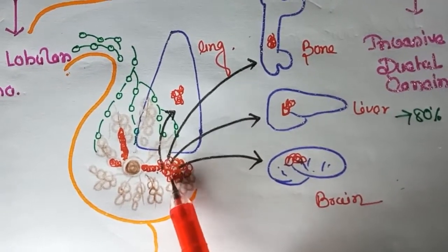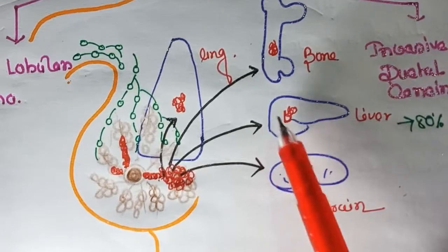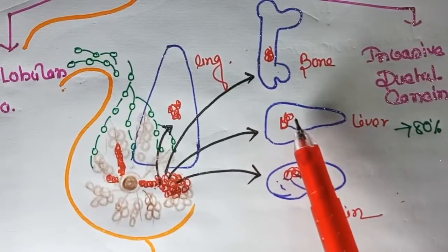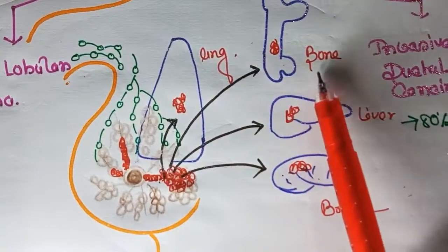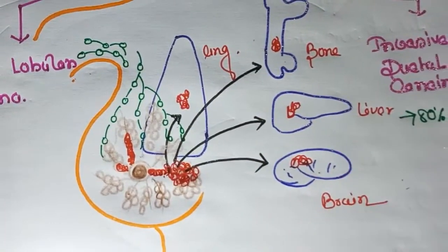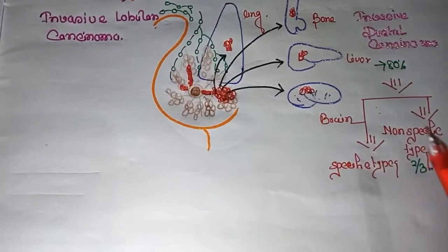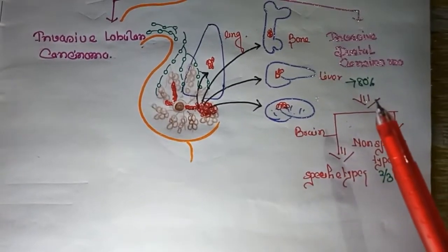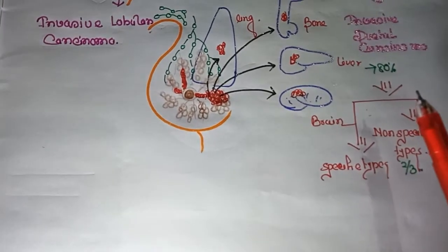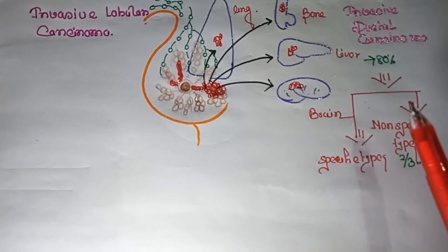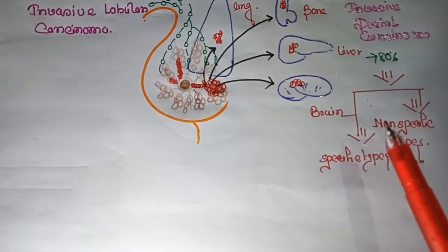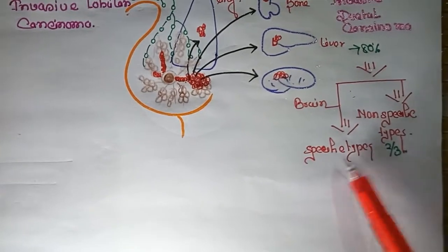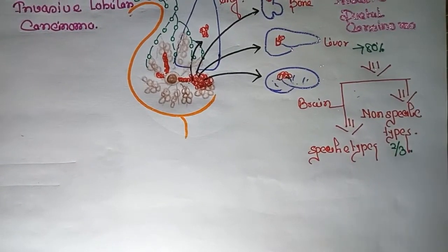Invasive ductal carcinoma starts in the milk duct and then breaks through the wall of the duct, invading the surrounding tissue. It may metastasize to other parts of the body such as the lung, bone, liver, and brain. According to morphological classification, invasive ductal carcinoma is classified into two types: specific types and non-specific types.